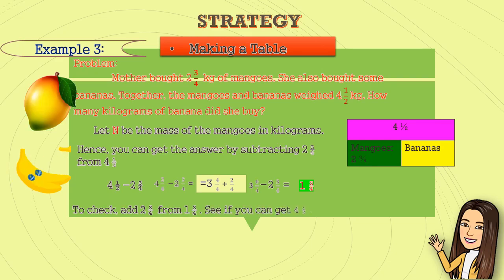So, to check, add two and three-fourths from one and three-fourths. See if we can get four and one-half. Two and three-fourths plus one and three-fourths. That is two plus one is three. Then, add the numerators and copy the denominator. The answer is three and six-fourths.